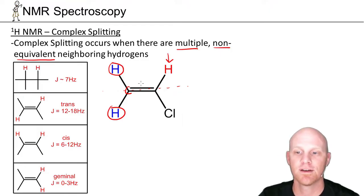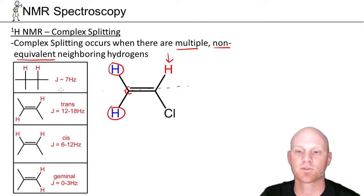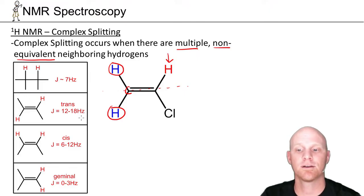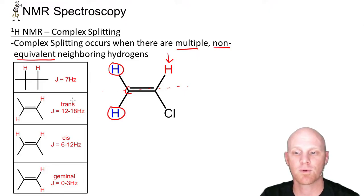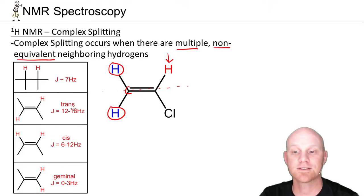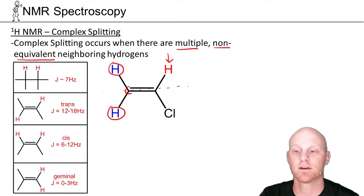So in this case it's got two different neighbors that are non-equivalent, and we're going to see complex splitting. The splitting that occurs has what's called a J-coupling constant associated with it — how far apart those peaks are when they're split is going to be different, and we often report these in hertz. You can tell the difference between cis, trans, and geminal using H-NMR.